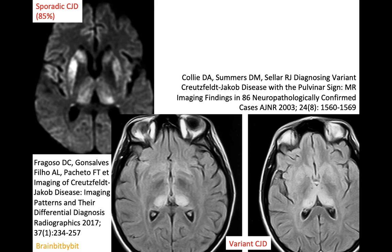Creutzfeldt-Jakob disease is a prion disease with rapidly progressive dementia that's usually fatal within a year. The most common form is the sporadic form, with involvement of the cortex, basal ganglia, and thalamus. These structures have high signal on FLAIR and diffusion-weighted images and do not enhance on post-contrast images. The bovine spongiform encephalopathy variant CJD often has hyperintensity in the pulvinar or the entire dorsomedial thalamic nuclei — this is called the hockey stick sign. Initially it was thought that about 90% of the bovine variant had these signs, but retrospectively it was much lower.